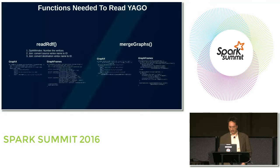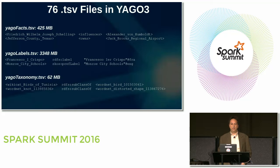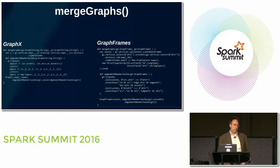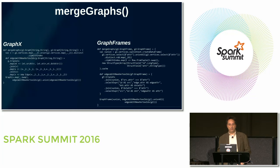We need to read this data into GraphX and GraphFrames, and we actually have to write a couple of custom functions: readRDF and mergeGraphs. The reason is that this data is all string literals, and everything in GraphX and GraphFrames is based on vertex IDs. So the first thing we have to do is come up with a mapping of vertex names to vertex IDs using zipWithIndex, and then it's just a couple of joins — the same approach in both GraphX and GraphFrames. The reason the GraphFrames code is so much longer is because GraphFrames, being based on data frames, is typed at runtime. The reason we need mergeGraphs is because we have multiple TSV files from Yago — we read in one file to create graph A, read another to create graph B, and merge them together, overlapping the common vertices.